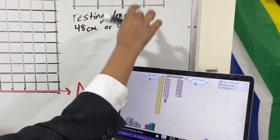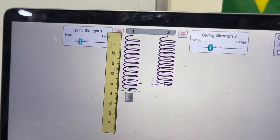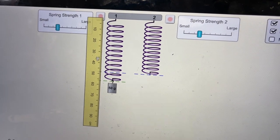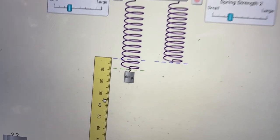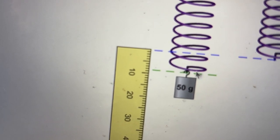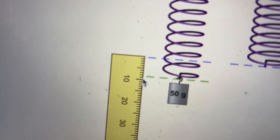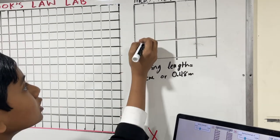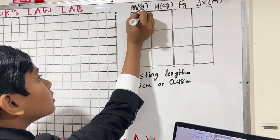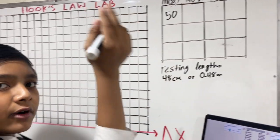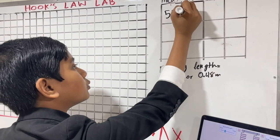So, resting length is equal to 48 centimeters, or 0.48 meters. Now, what we're going to do is we're going to take the resting length, and then slide the zero of the ruler up there. And now, the ruler measures delta x.